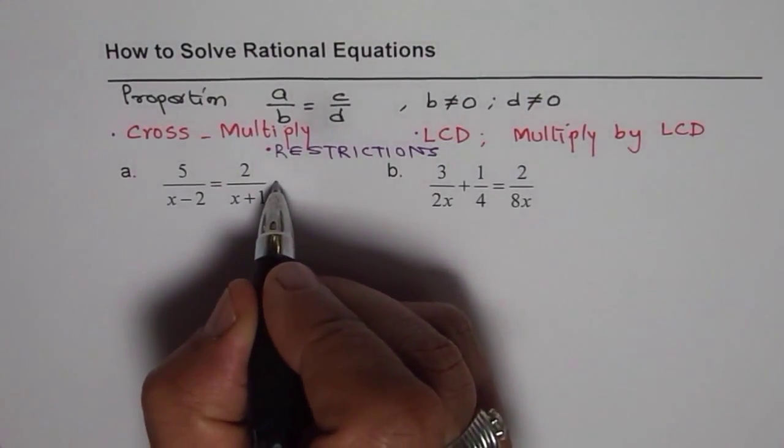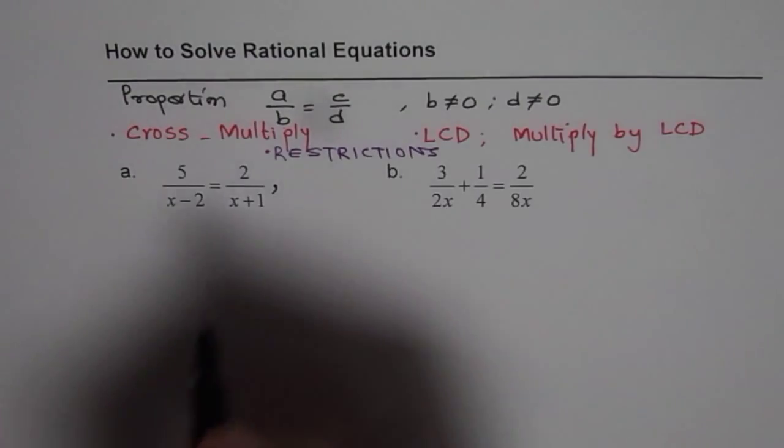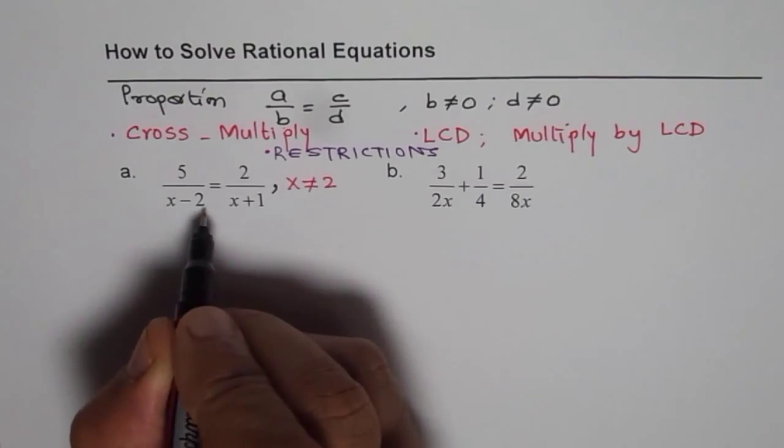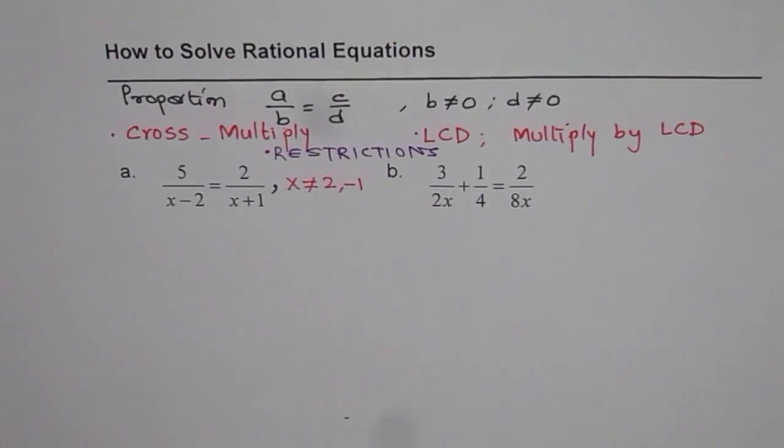But remember, first thing, you have to write restrictions. So restriction here is that x should not be equal to 2, since it will make this denominator 0, or minus 1. Now begin solving your equation.